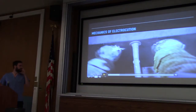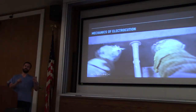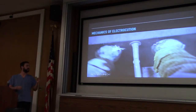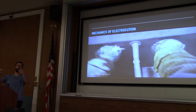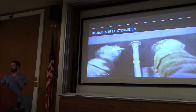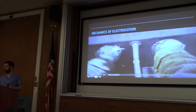The first thing that happens with AC low voltage electricity is you get tetanic contractions. This is a real thing — when someone grabs onto something and it's an AC circuit, their flexors will fire, and your flexors are stronger than your extensors. So you'll just be grabbing onto that thing, and that causes you to hold onto it for longer.